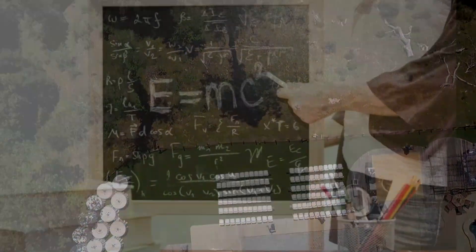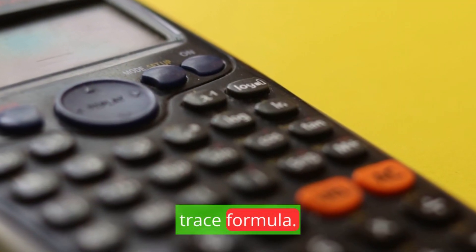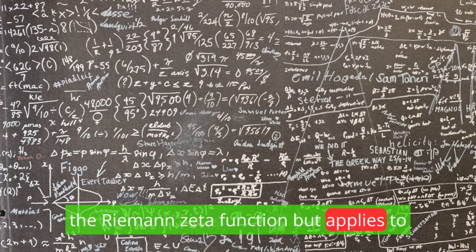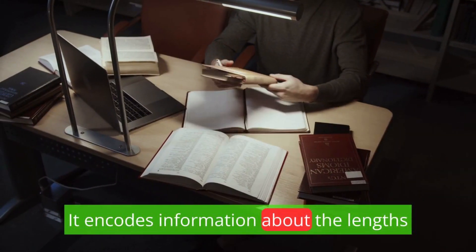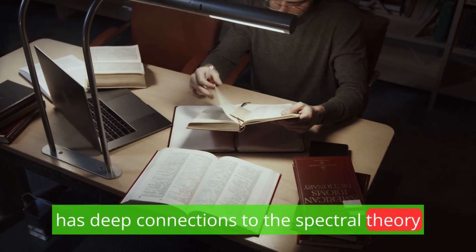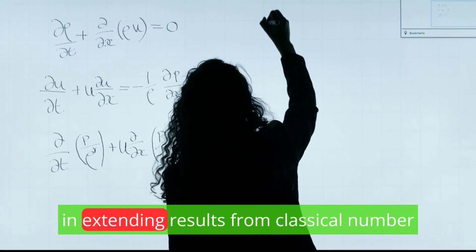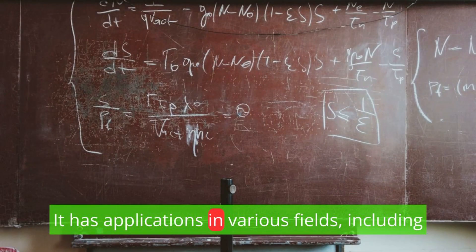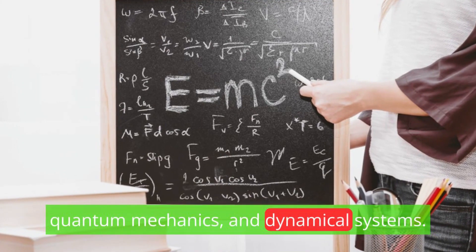Selberg zeta function. Selberg also introduced the Selberg zeta function, closely related to the trace formula. The Selberg zeta function is analogous to the Riemann zeta function but applies to Riemann surfaces rather than the complex plane. It encodes information about the lengths of closed geodesics on a surface and has deep connections to the spectral theory of automorphic forms. The Selberg zeta function has been instrumental in extending results from classical number theory to more general settings. It has applications in various fields, including arithmetic geometry, quantum mechanics, and dynamical systems.